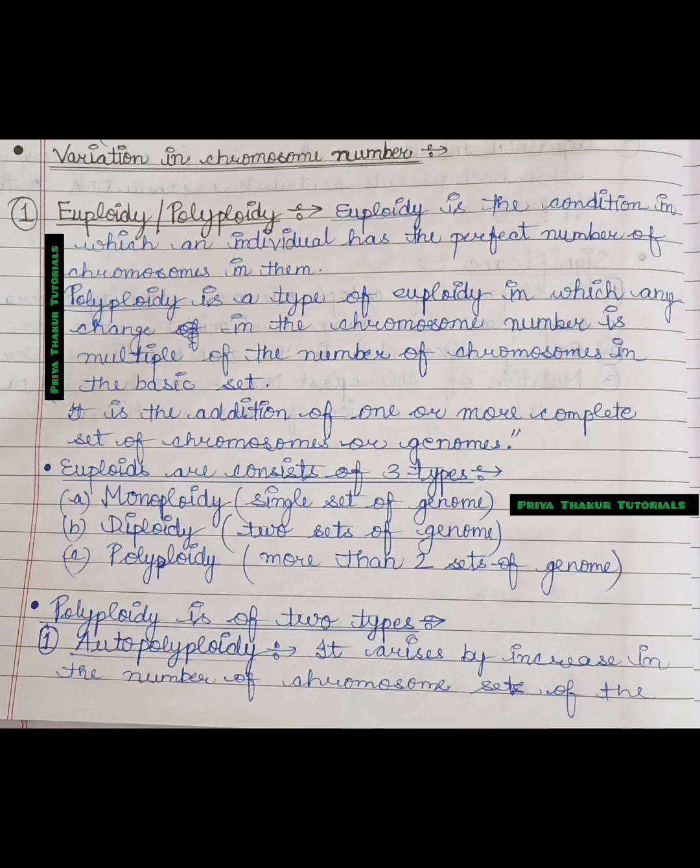Euploids consist of three types. Three types are divided in euploidy: monoploidy, diploidy, and polyploidy. In monoploidy, a single set of genome or single set of chromosomes are present. The second is diploidy when two sets of genome or chromosome are present. The third is polyploidy when more than two sets of genome or chromosome are present.